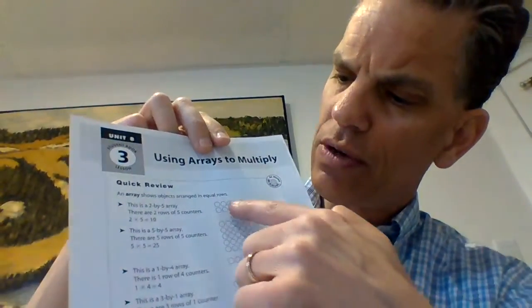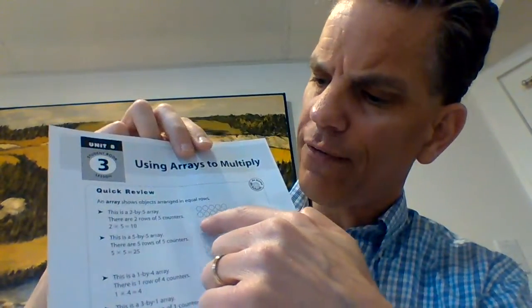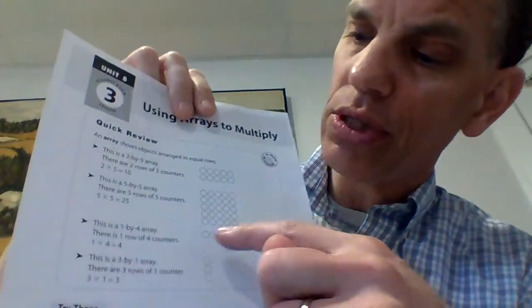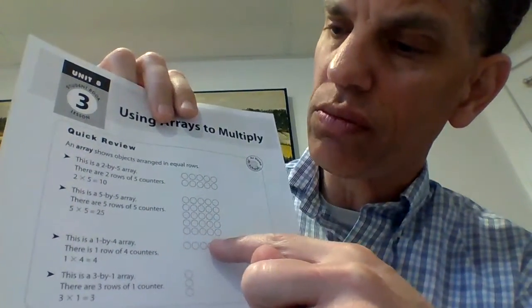This is a 5 by 5 array. There are 5 rows of 5 counters. As you can see going down the page, there's 5 and 5 — so horizontal and vertical. This is a 1 by 4 array. There is 1 row of 4 counters. Pretty simple because it's just 4 straight across. So it's 1 times 4 equals 4.